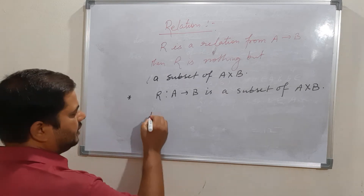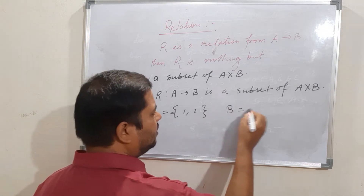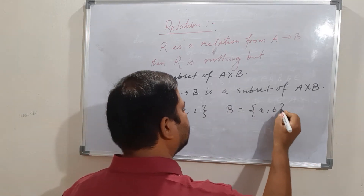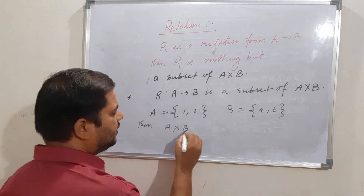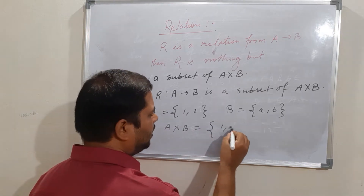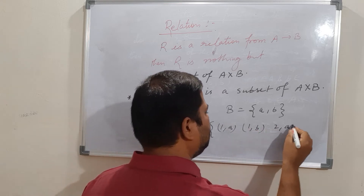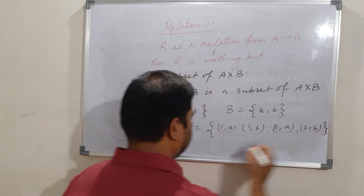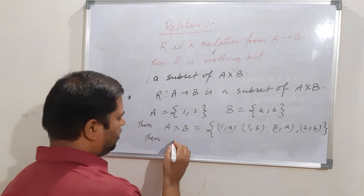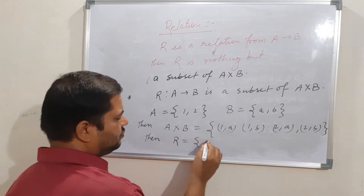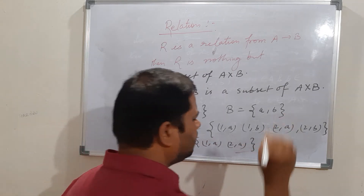For example, suppose A equals {1, 2} and B equals {a, b}. Then A cross B is nothing but {(1,a), (1,b), (2,a), (2,b)}. Then any subset of A cross B — for example {(1,a), (2,a)} — is a relation.